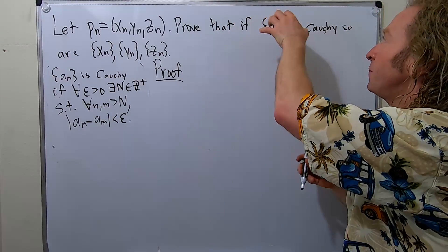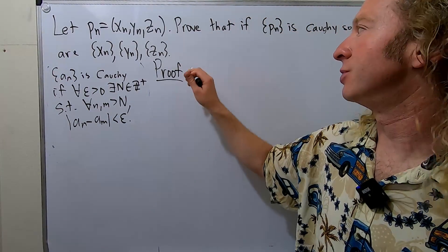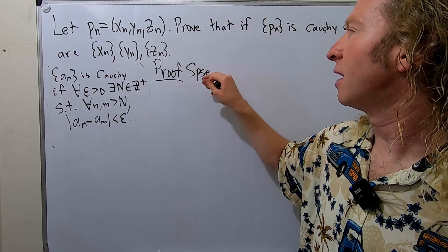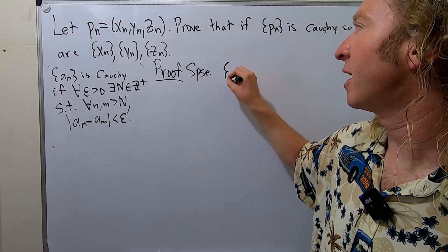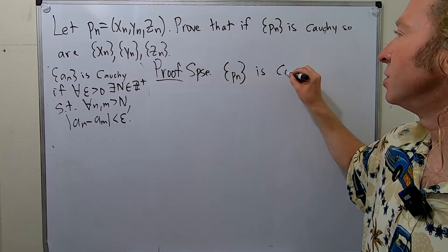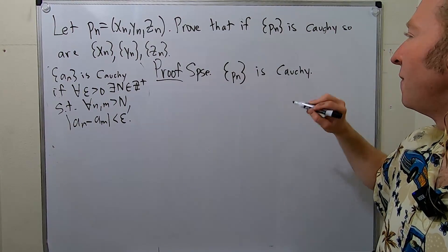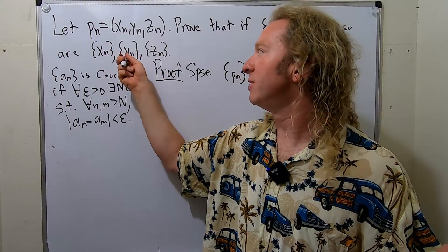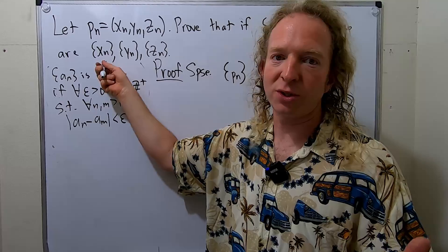So we'll start by assuming our sequence is Cauchy. So suppose that we have a Cauchy sequence. So we have the sequence here, and we'll assume it's Cauchy. So suppose P sub n is Cauchy. And the claim is that we want to show that each of these is Cauchy. So let's start by showing this one is Cauchy.